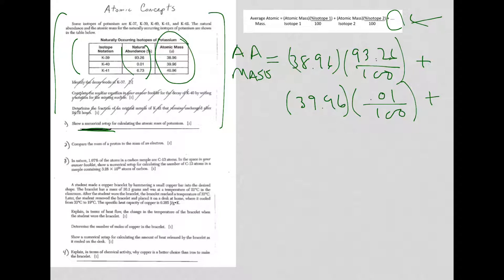Plus, you just keep adding the pieces for however many different isotopes you have. So the third one here for potassium 41 is 40.96, and I'm going to multiply that by 6.73 divided by 100. And that's a correct setup. That's all they were looking for there.